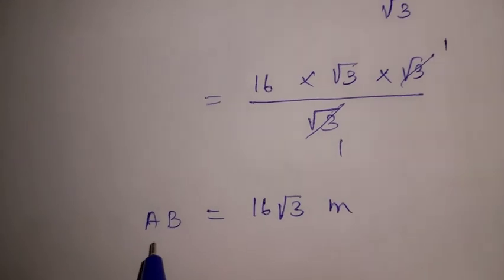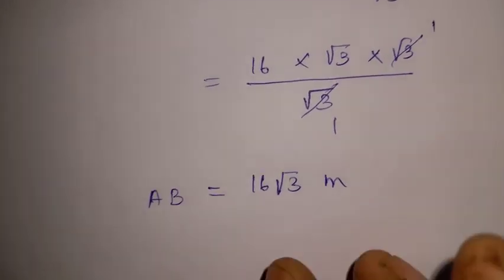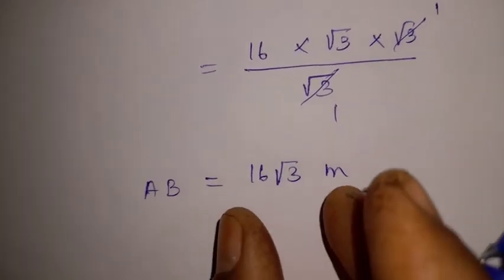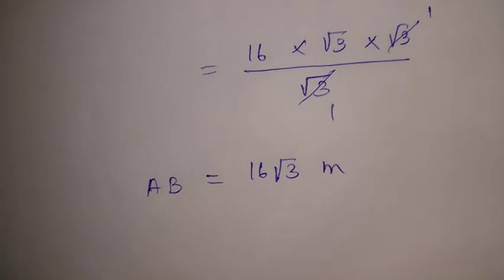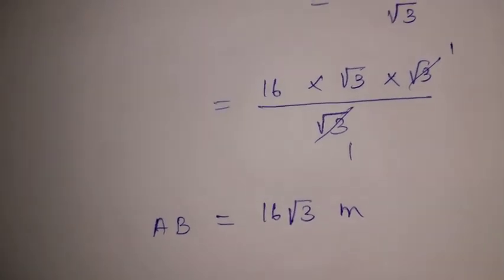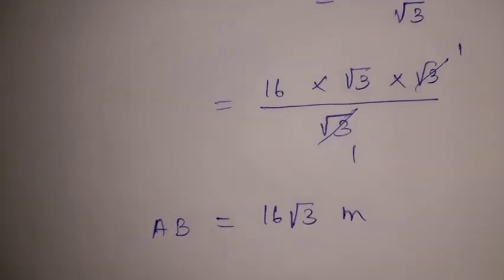AB is the height of the tower. Therefore, the height of the tower is 16 root 3 meters. Thank you for watching my video. Subscribe to Math.